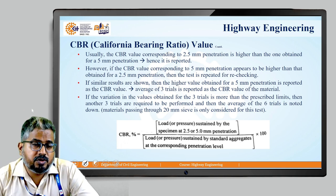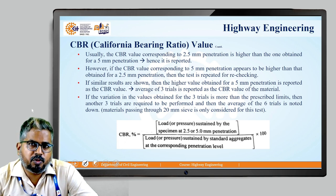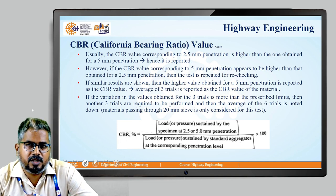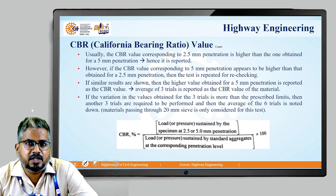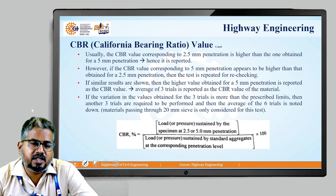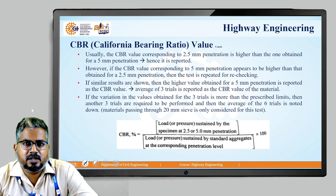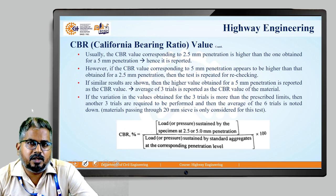The CBR value corresponding to 2.5 mm penetration is usually higher than that obtained for 5 mm penetration, so it is reported as the higher value. However, sometimes the CBR value at 5 mm penetration can appear higher; in that case the test must be repeated for rechecking. If similar results are obtained again showing higher values for 5 mm penetration, the average of three trials is considered the CBR value of the material. If variation in these three trial values exceeds prescribed limits, another three trials must be made, and the average of all six trials is noted. This test is performed for materials passing through a 20 mm sieve.